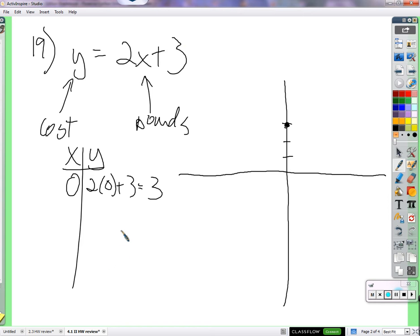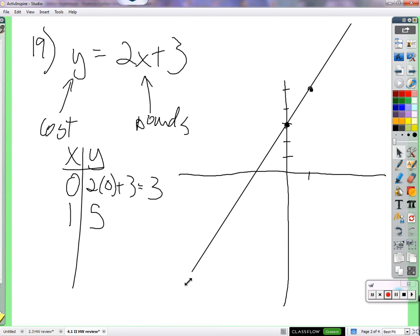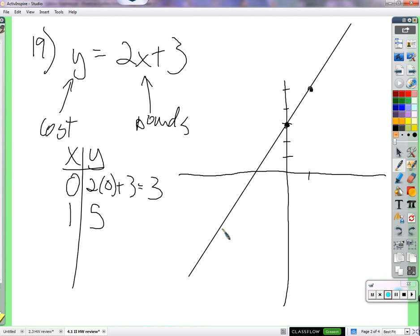Then what should we do? We also do 1. We can plug 1 in there. Since this is just a 2, it's not a fraction, if we plug in 1 for x, it's not going to be very difficult. 2 times 1 is 2, and 2 plus 3 is 5. So 1 comma 5. So our line is going to go through those two points. There we go. So we've graphed it.